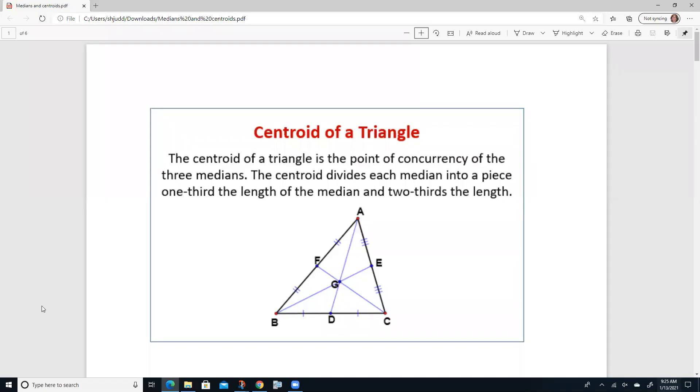Let's talk about the centroid of a triangle. The centroid of a triangle is the point of concurrency of three medians, so concurrency just means where the three things come together.